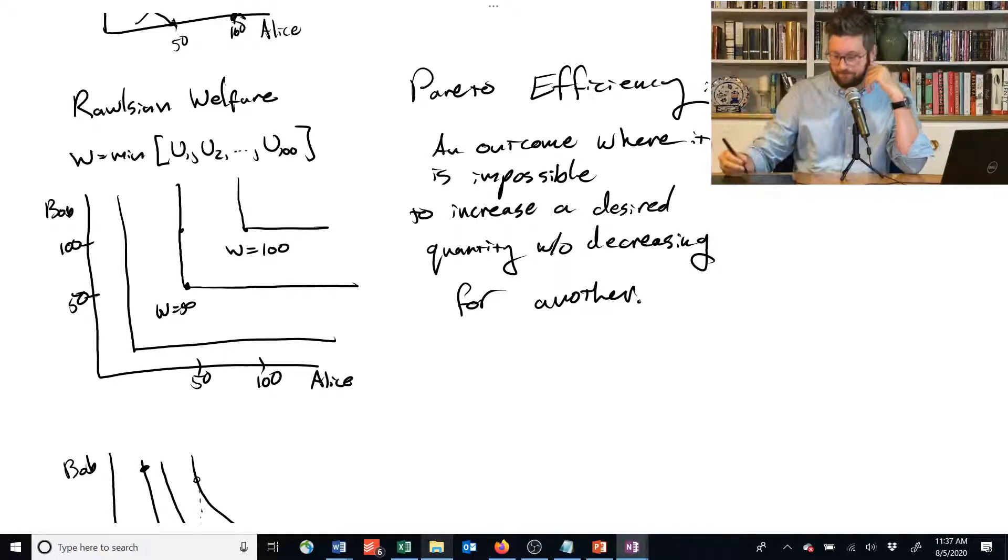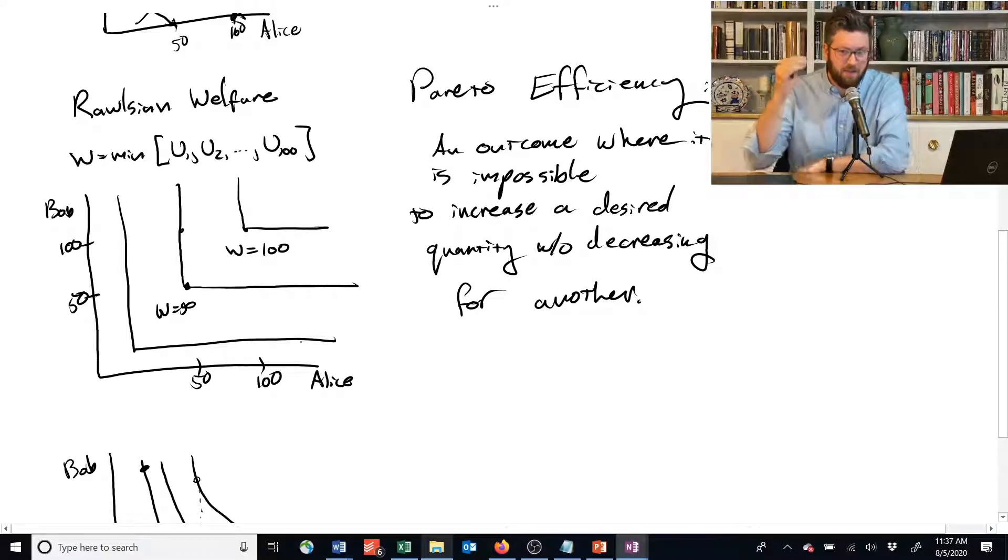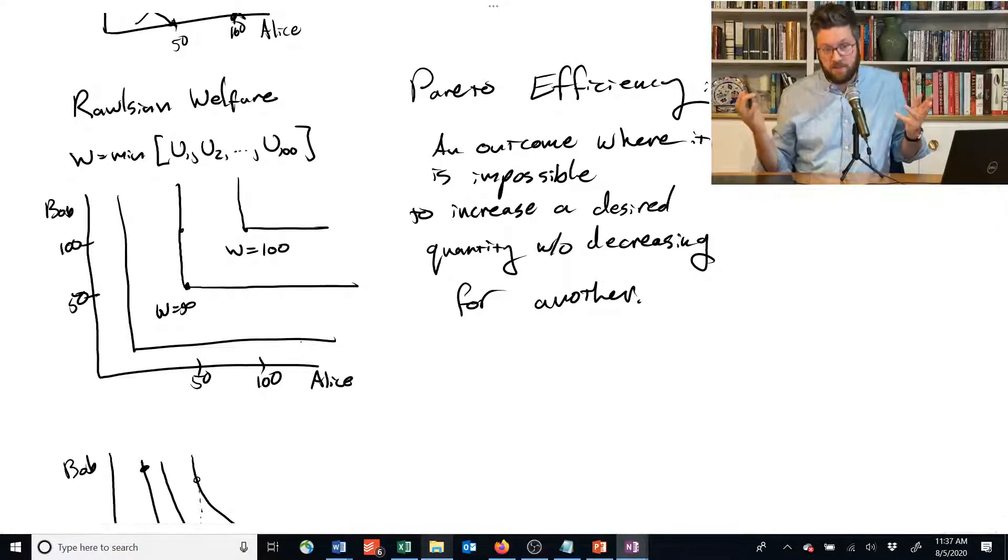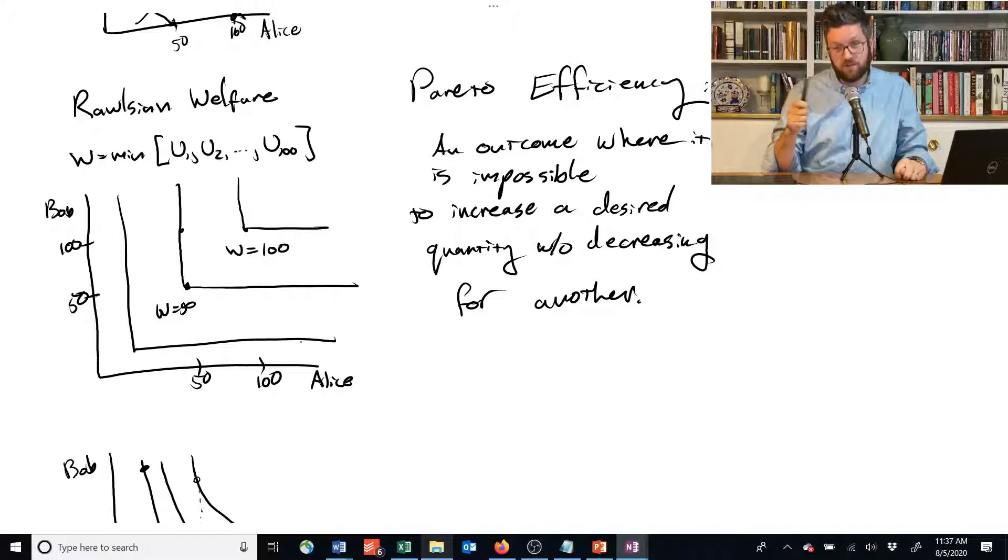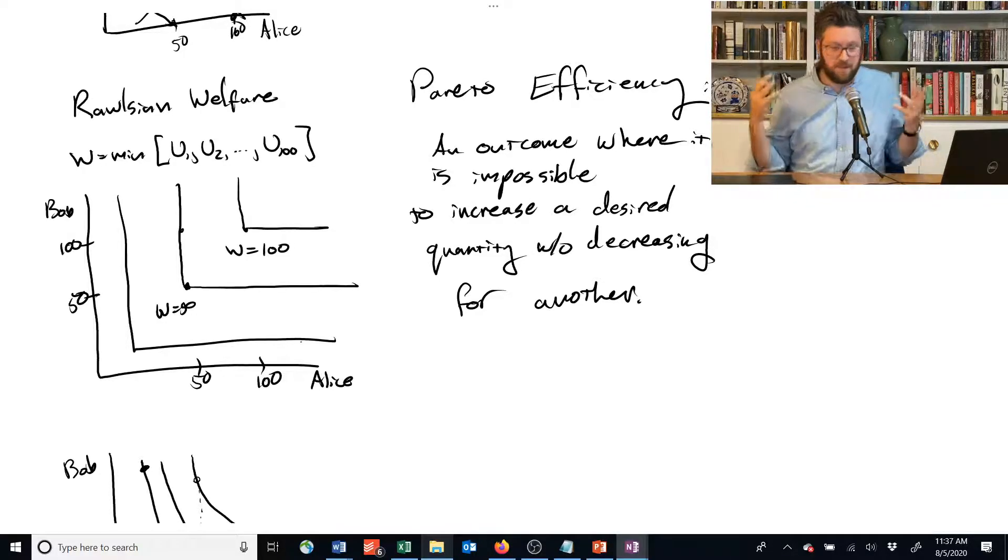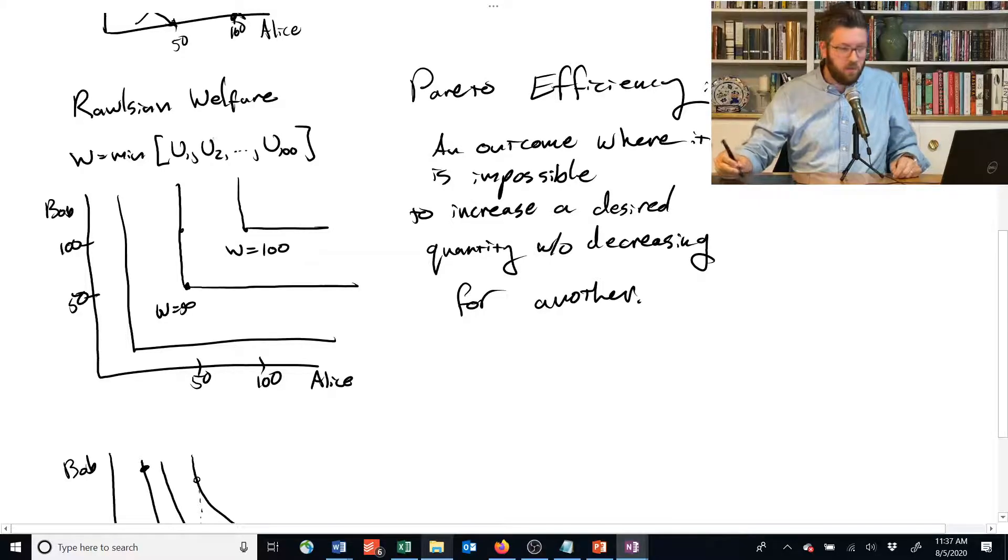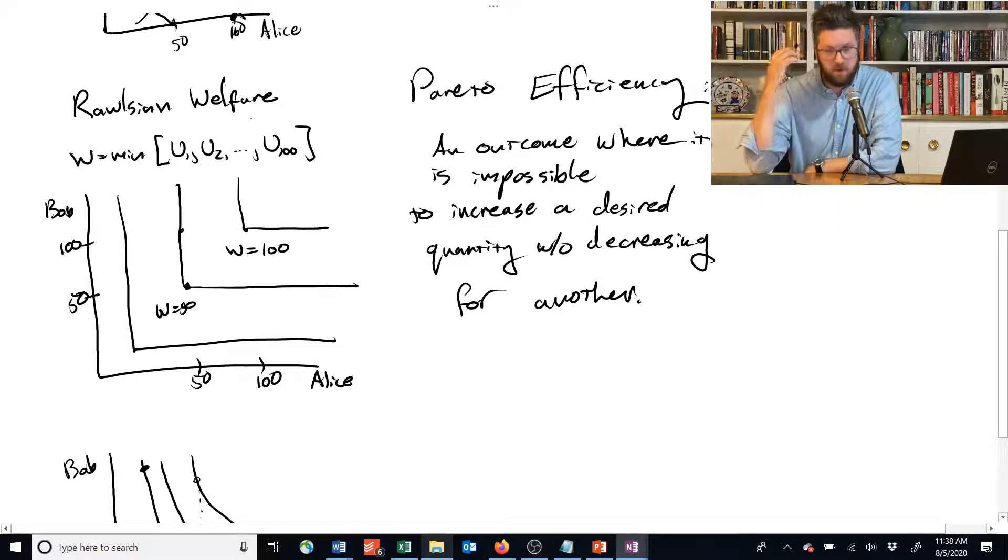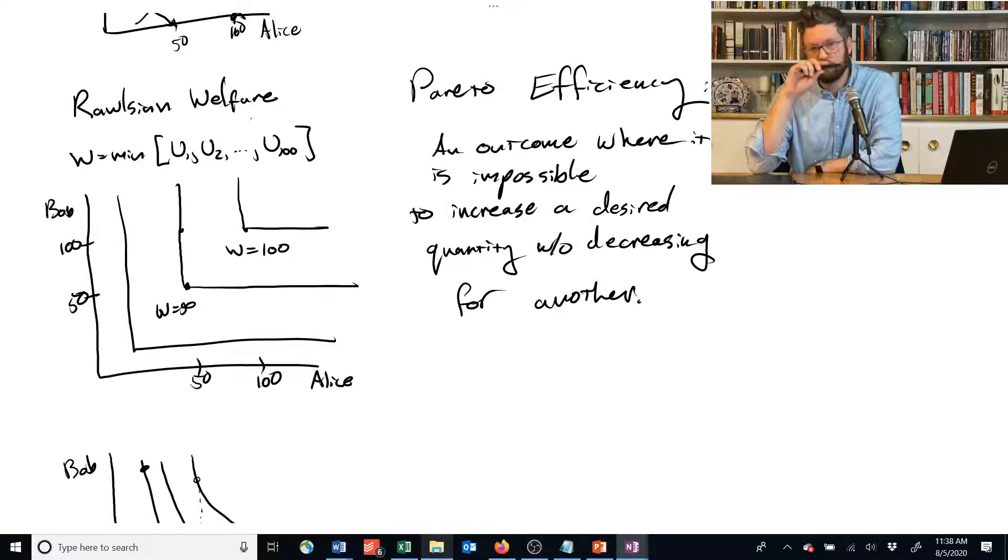We can say that if everyone would be happier moving from X to Y, then we should move that way. Or if we can move from X to Y and one person prefers it and everyone else is indifferent, that's also good. So what we're going to do in the next video is talk about, in the context of sort of production functions, preferences, and endowments of natural resources and other inputs, what criteria are required to at least achieve Pareto efficiency.